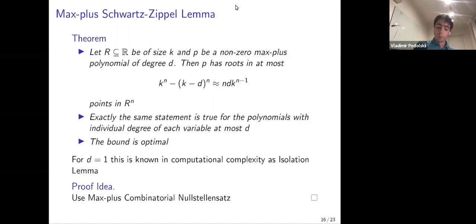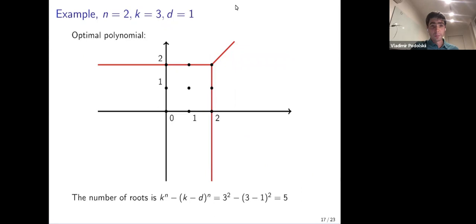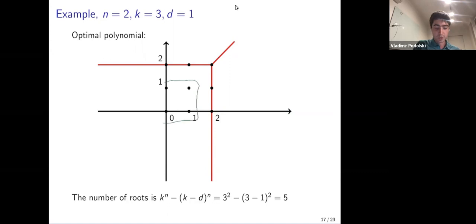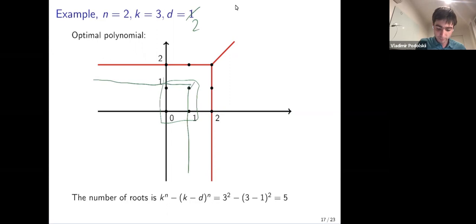The proof uses the previous max-plus combinatorial results. A picture illustrates how the bound is attained: with two variables, K equals three, and D equals one, we cover all the points in the grid, and the number of roots is the full square minus a smaller square. For D equals two, one takes two such polynomials and multiplies them, getting roots in the whole cube minus the remaining cube.